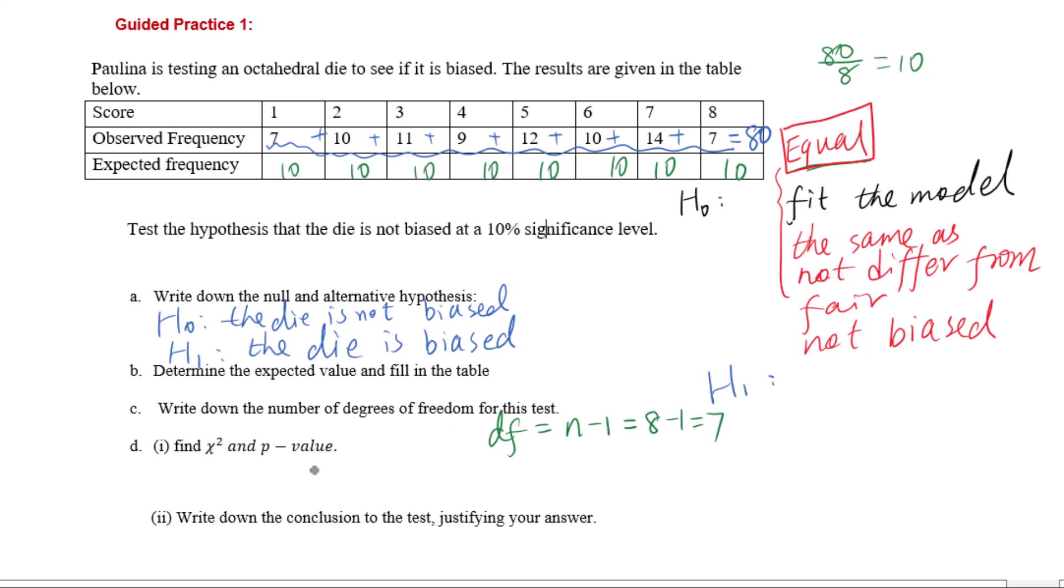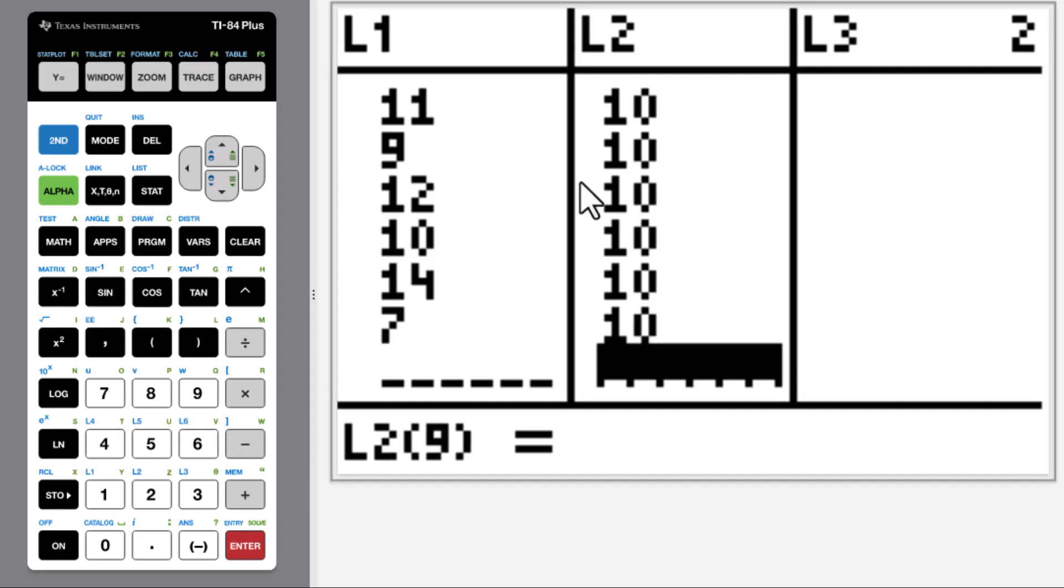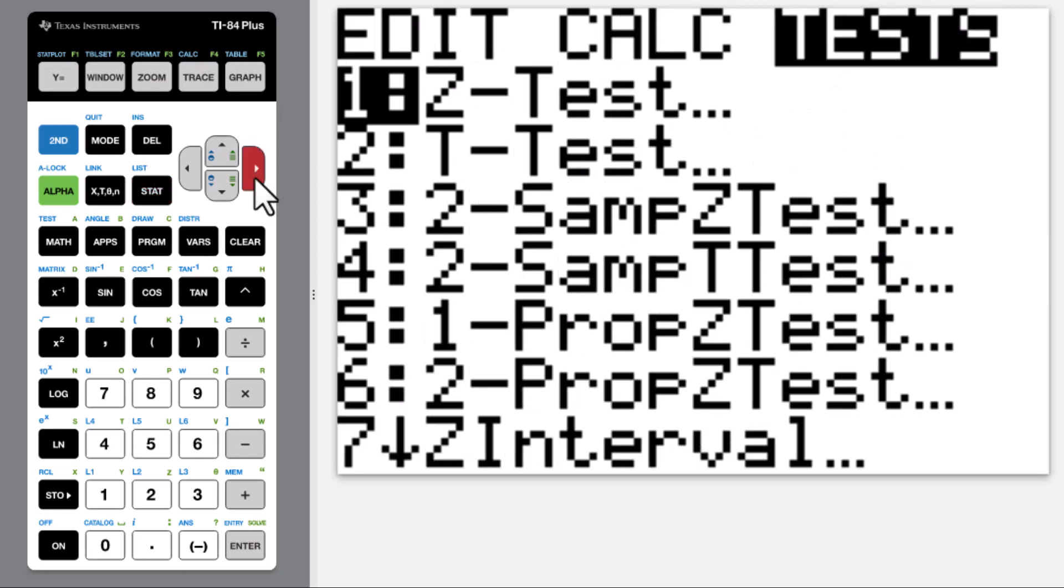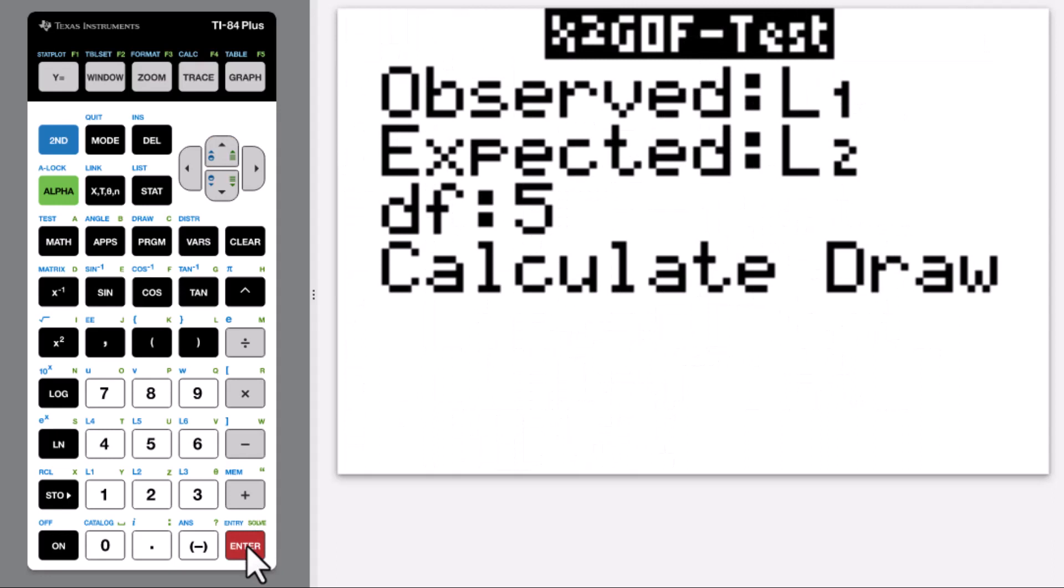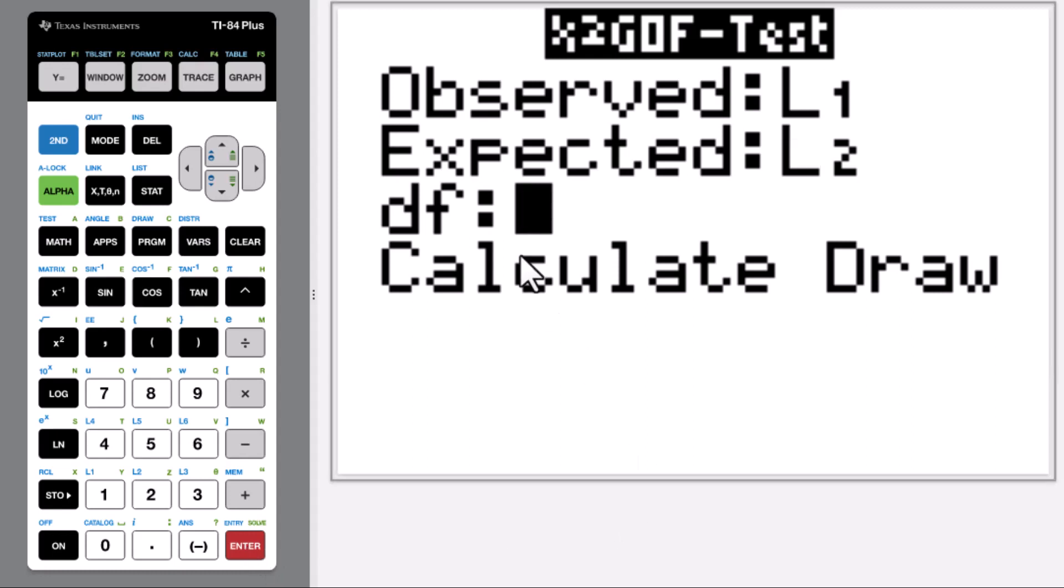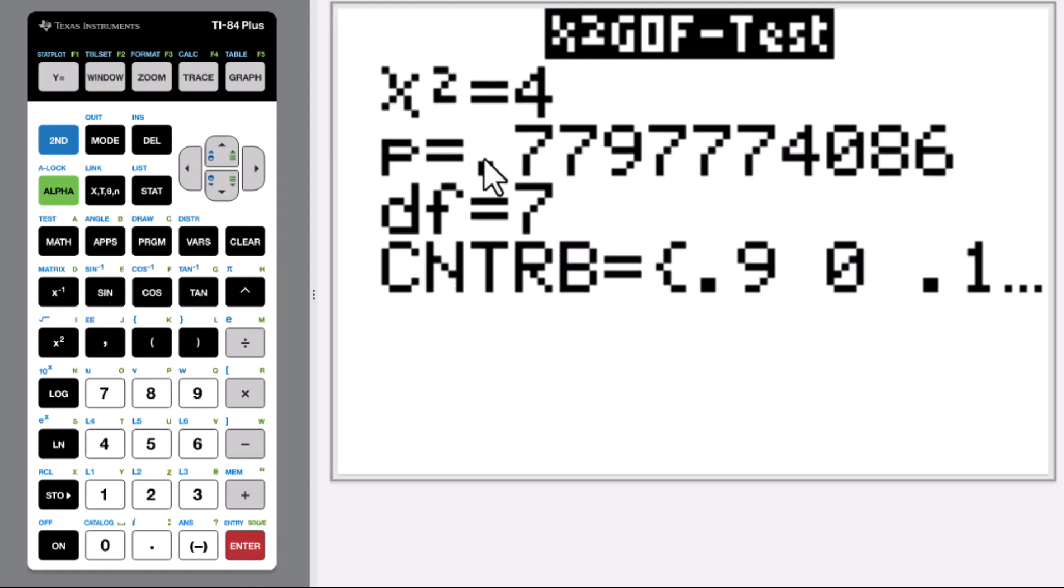Find chi-square and p-value using a graphing calculator. Go to Stat, Edit. Put the observed frequency into L1 and expected frequency into L2. Go back to Stat, go to Tests, chi-square GOF test, Enter. Observed is L1, expected is L2, degree of freedom is 7. Calculate. Chi-square equals 4, p-value equals 0.780.